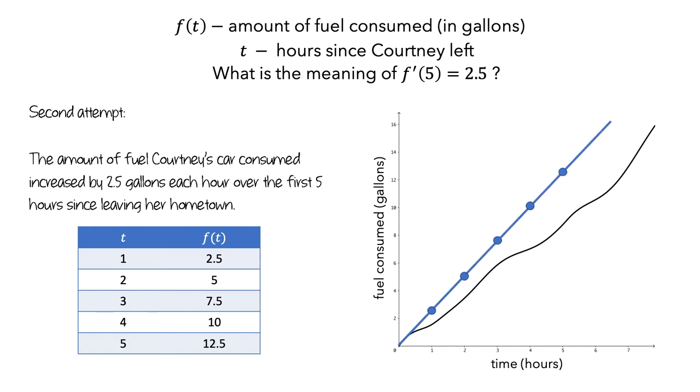And the difference between these graphs suggests that this interpretation is incorrect. What's happening here is that this interpretation is as a constant rate of fuel consumption from t equals 0 to t equals 5. But Courtney isn't necessarily using fuel at a constant rate. She could be speeding up, slowing down, going uphill or downhill over those 5 hours.